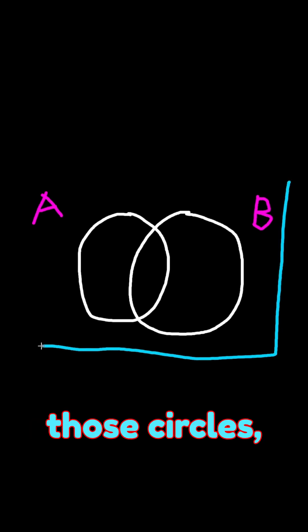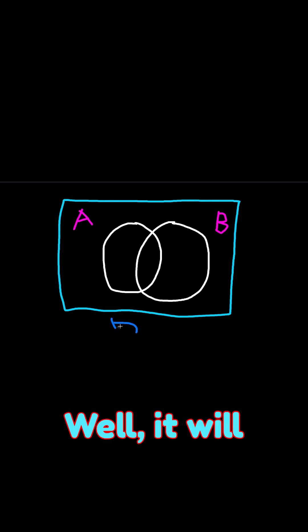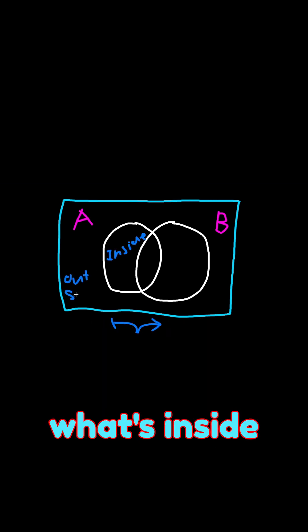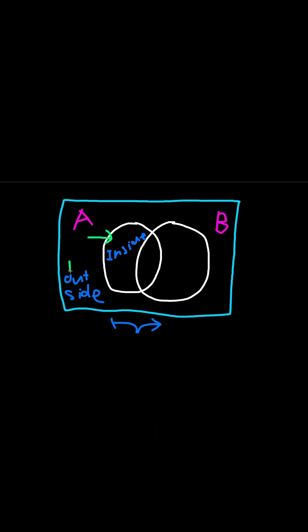Around both circles, we'll draw a big rectangle. And why do we need a rectangle? Well, it will help us separate what's inside and outside of both of the sets.